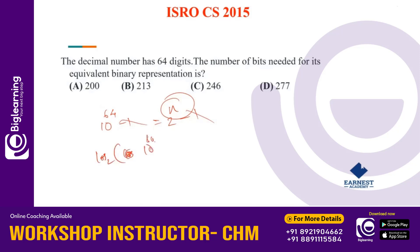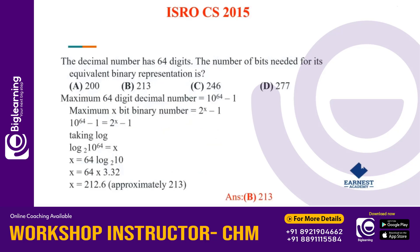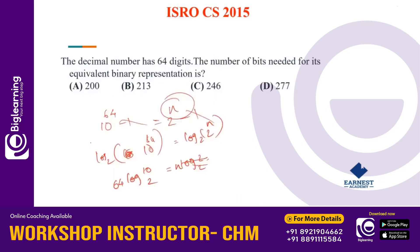We have log base 2 of 10 raised to 64, which equals log base 2 of 2 raised to n. This gives us 64 log 10 to the base 2 equals n log 2 to the base 2, which equals n. Log 10 to the base 2 is 3.32. So n equals 64 into 3.32, which is approximately 213 bits.